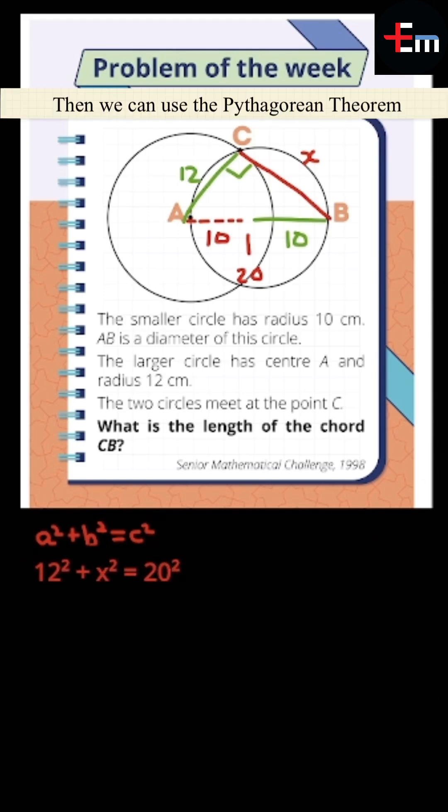Then we can use the Pythagorean theorem, A squared plus B squared equals C squared. Sub the values in, 12 squared plus X squared equals 20 squared.